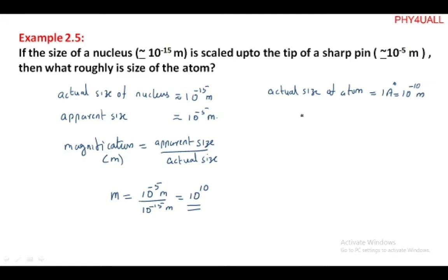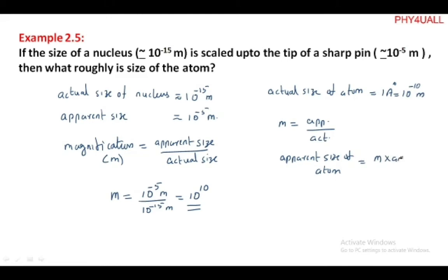Once again, using the formula: magnification equals apparent size divided by actual size. Here we are asked for the apparent size of the atom, so apparent size of atom equals magnification multiplied by the actual size of atom. The actual size of atom is 10 to the power minus 10 meter.